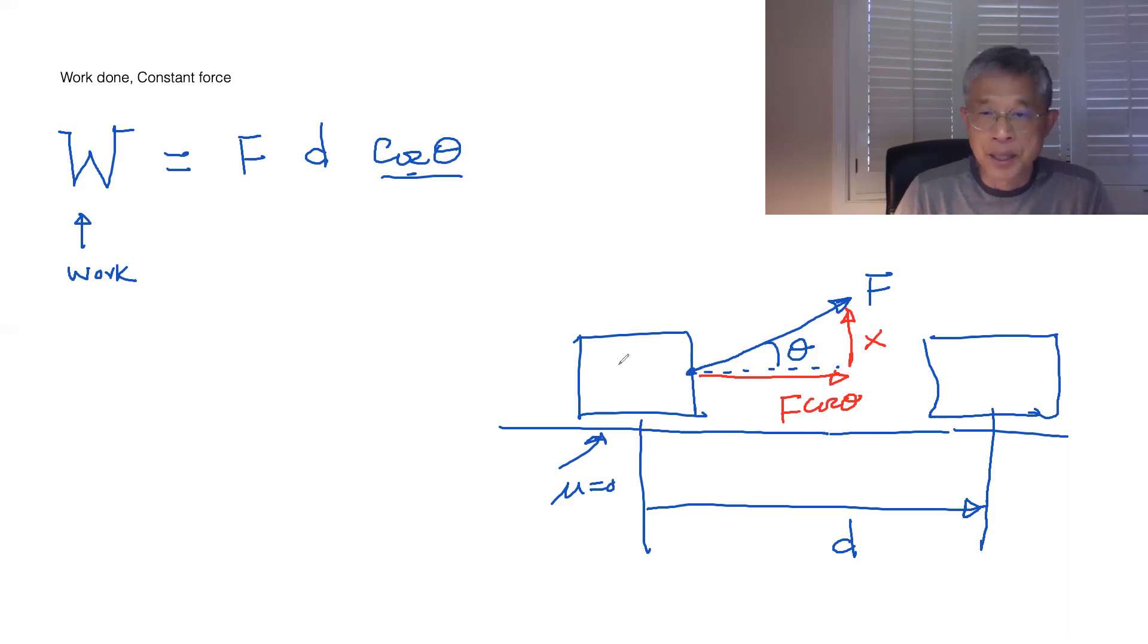And so in this case, if I say this F is equal to one Newton, and theta is equal to 30 degree, and distance is equal to one meter. So then you can say, well, with this force, at D equal to one meter, I'm going to call this one 60 degrees to make it simple. So cosine 60 is one half.